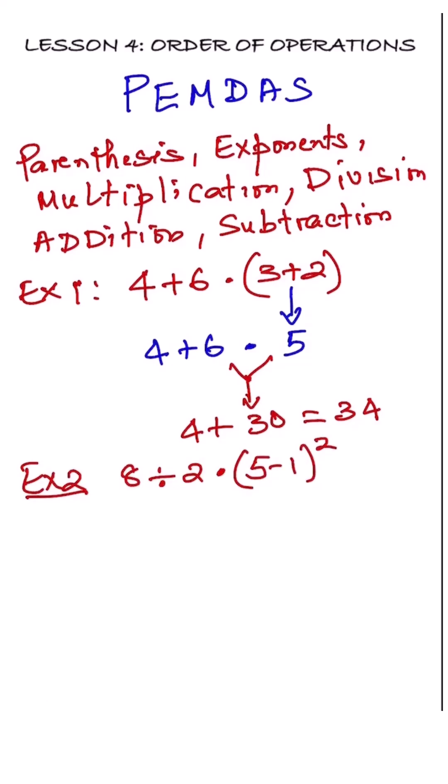8 divided by 2 times the quantity 5 minus 1, all squared. Start with the parentheses. 5 minus 1 equals 4.